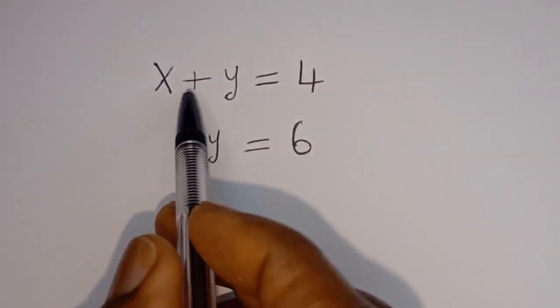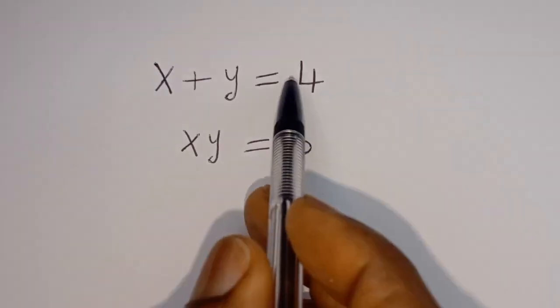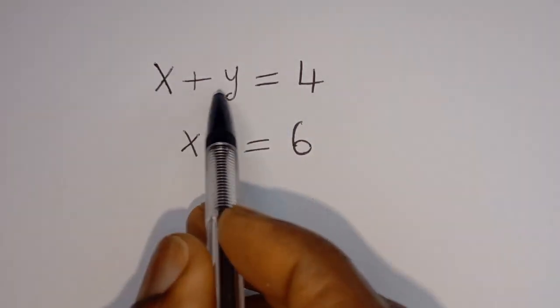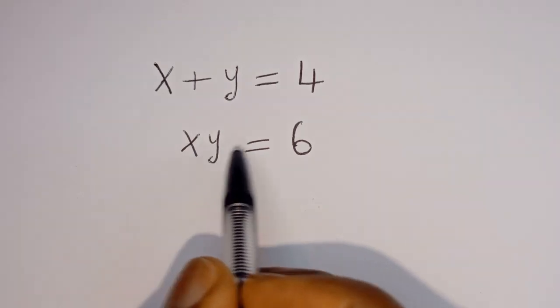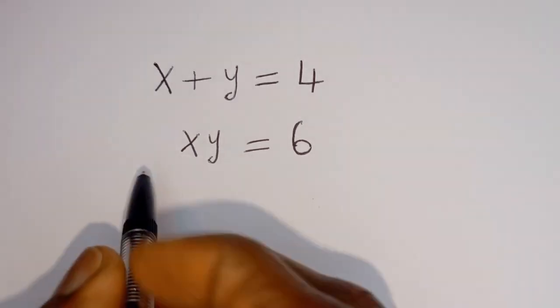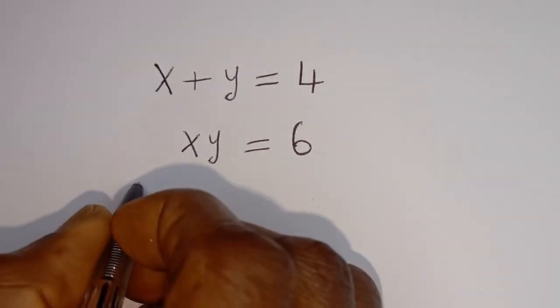Hello. How to solve for x and y in this equation: x plus y is equal to 4, and x times y is equal to 6. Solution.